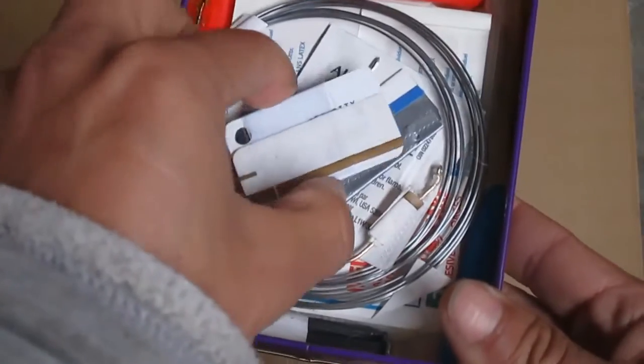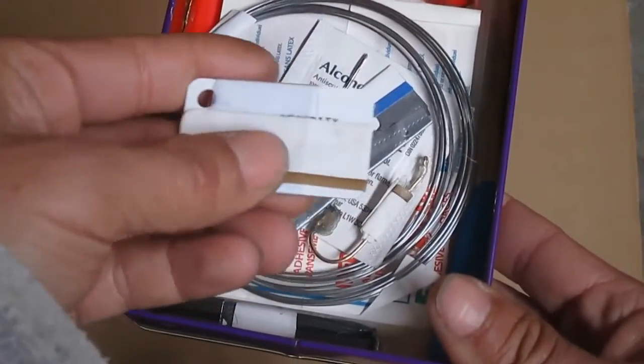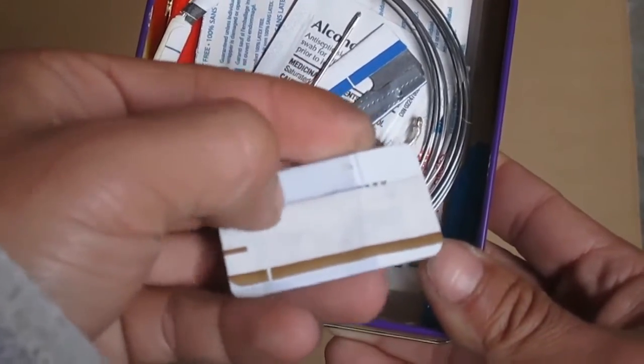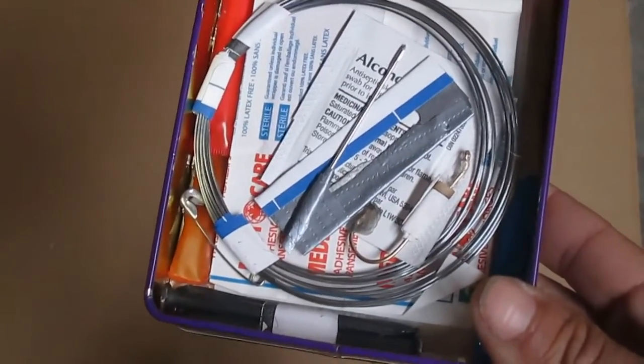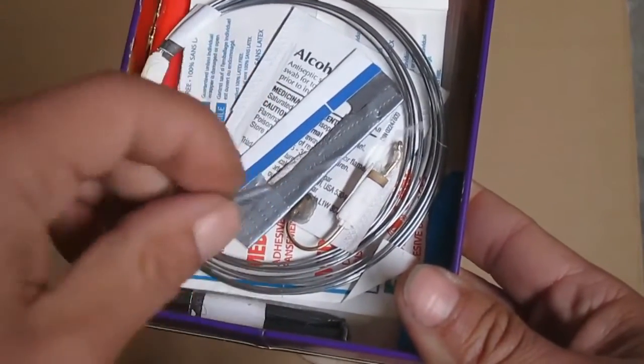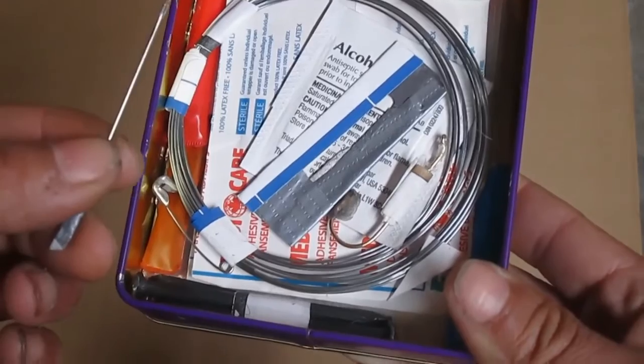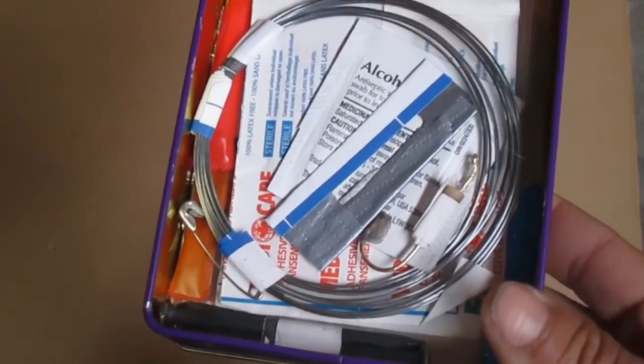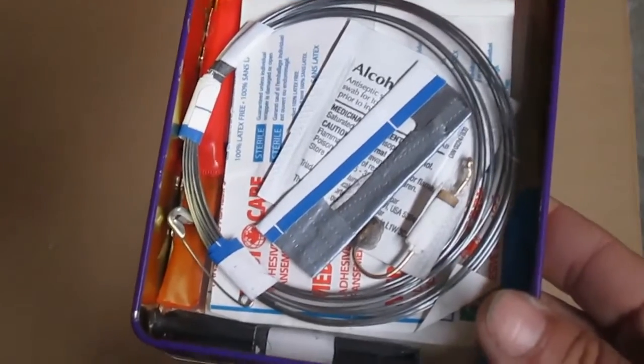Now I have some fishing line here. Good for fishing, lashing, that kind of stuff. Got a needle in here. Good for stitching up, sewing, repairing any of the gear I have, any of the clothes I have with the fishing line or with the parachute cord.